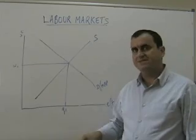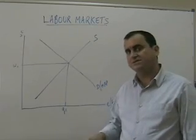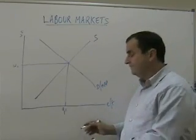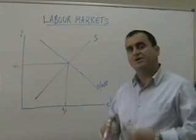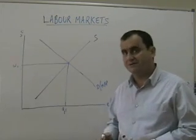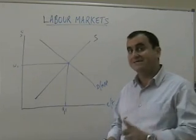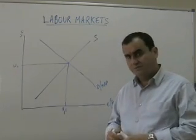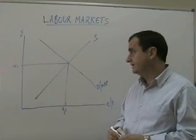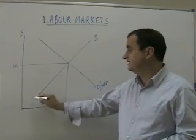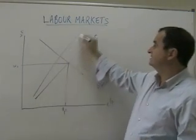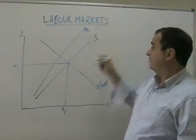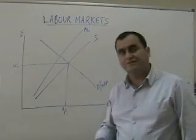We'll come back to the effects of unions soon. But first, let's consider what happens if there was a monopsonist buyer of labour — a single buyer of labour.